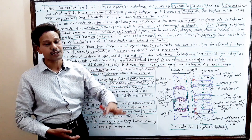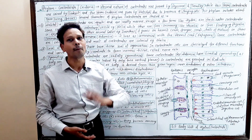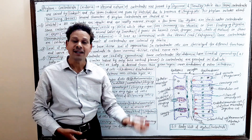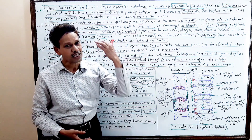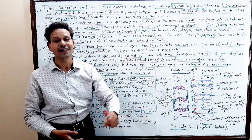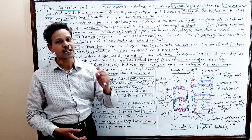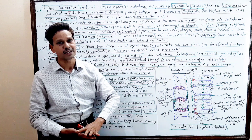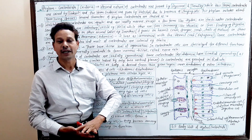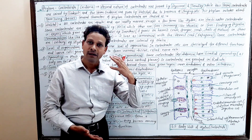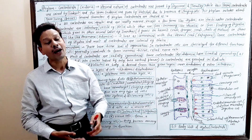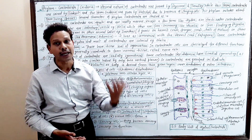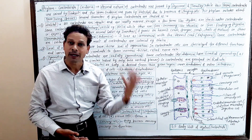This phylum is also named Radiata because the symmetry is exclusively radial. That's why these organisms are called Coelenterata, Cnidaria, and are grouped under Phylum Radiata.